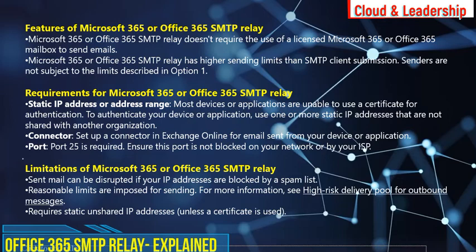Requirements for Microsoft 365 or Office 365 SMTP relay: a static IP address or address range is required, as most devices or applications are unable to use a certificate for authentication. To authenticate your device or application, use one or more static IP addresses that are not shared with another organization. You also need to set up a connector in Exchange Online for email sent from your device or application. Port 25 must be enabled in your firewall.